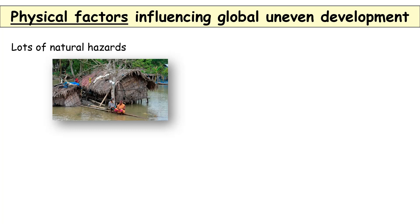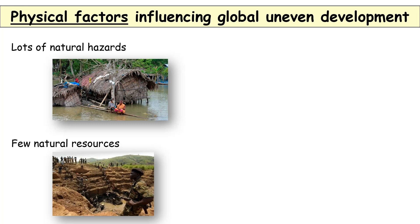If those hazards weren't there, they'd have more money to spend on their country. Next, natural resources: a country that has few natural resources can make few products, makes less money, and therefore there's less tax to spend on development. Also, a poorer country might not have enough money to exploit the resources it does have — for example, building roads or ports to export those resources.